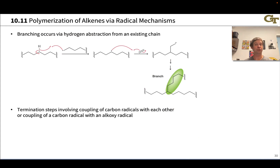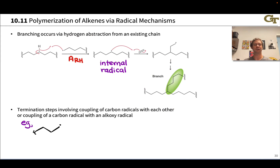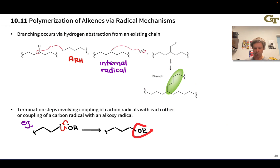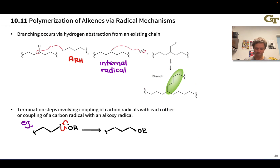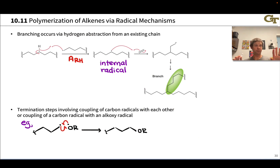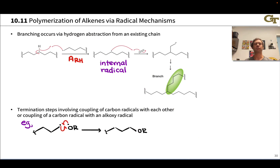Termination steps can also occur through radical-radical couplings, which tend to shut down polymerization entirely by creating even-electron species with no unpaired electrons. For example, a growing polymer chain might run into an alkoxy radical, and when those two couple, we get an OR group on the end of the chain, which is now done polymerizing. Termination can also occur through coupling of two radicals on the ends of two different growing polymer chains — this dramatically increases the chain size but also shuts down further polymerization.